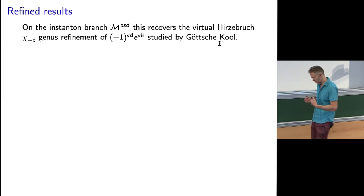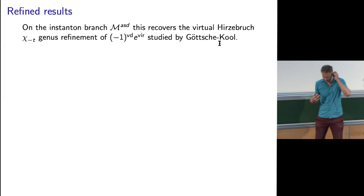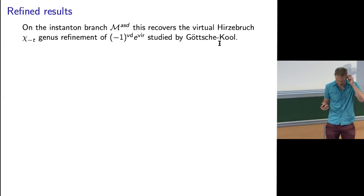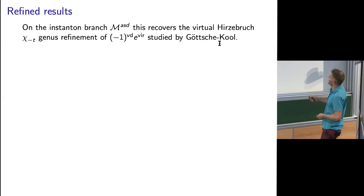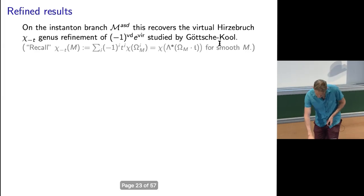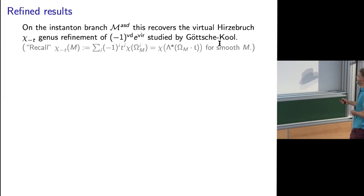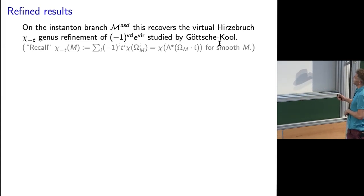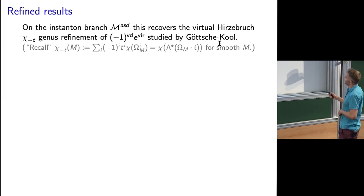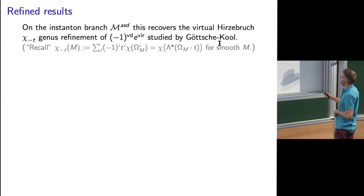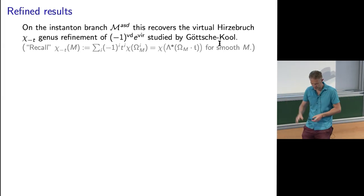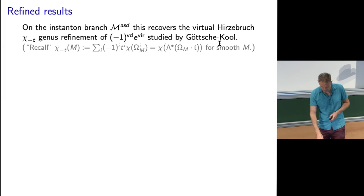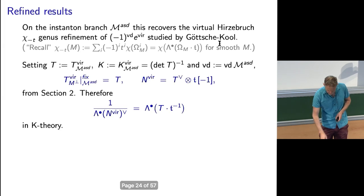The numerical Vafa-Witten invariants on the instanton locus gave the virtual Euler characteristic. Here what we get is the virtual Chi-y genus — a refinement of the Euler characteristic. In the smooth case, instead of taking the Euler characteristic, you take the alternating sum of the holomorphic Euler characteristics of the i-forms on M, weighted by T^i. This is sort of one half of the Poincaré polynomial or E-polynomial.